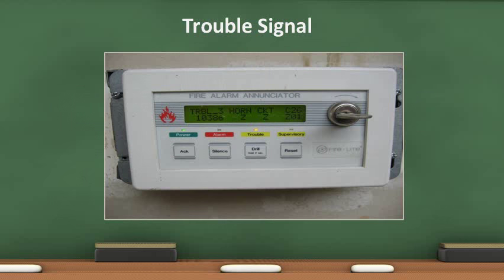A yellow light over the trouble sign indicates a problem exists in the system, which could be a ground fault, disconnected smoke detector, device, appliance, or loss of primary power. This system status is in violation of the codes and must be rectified immediately.